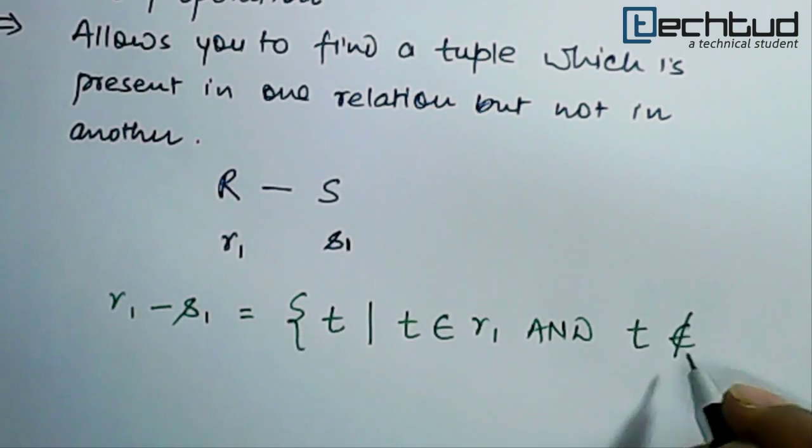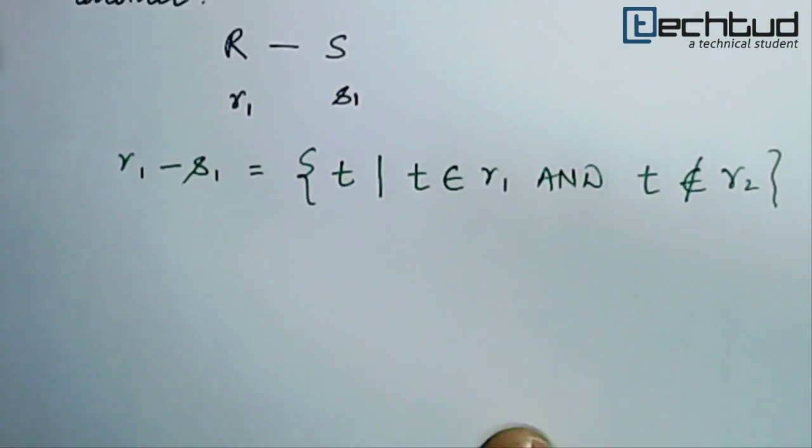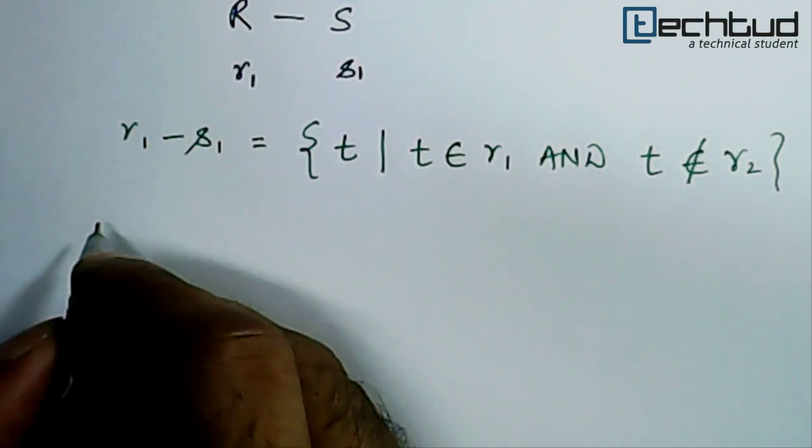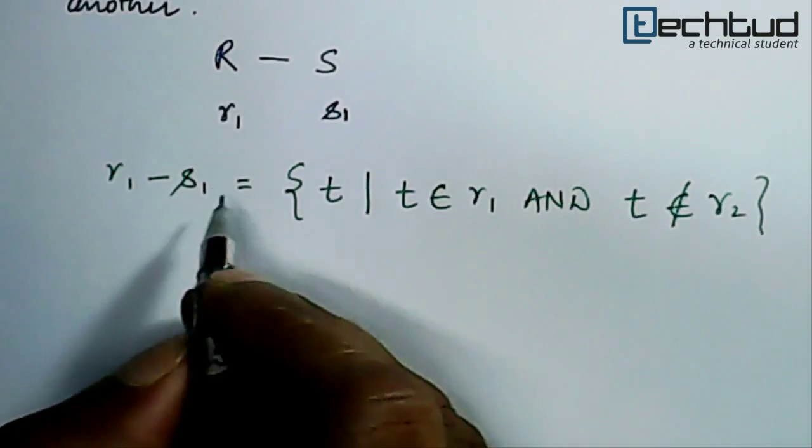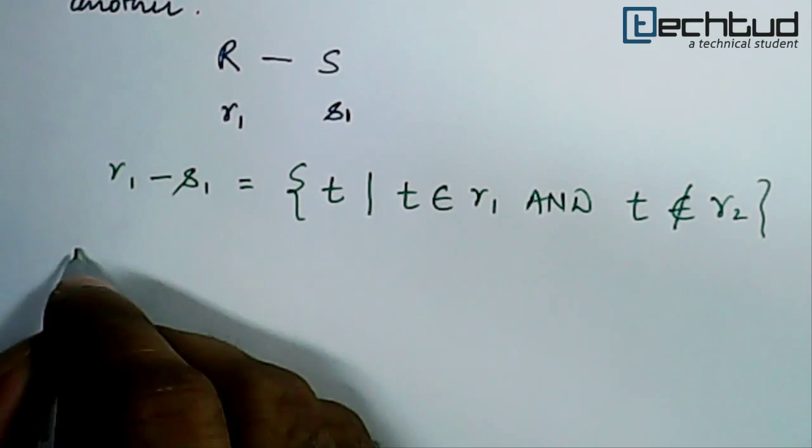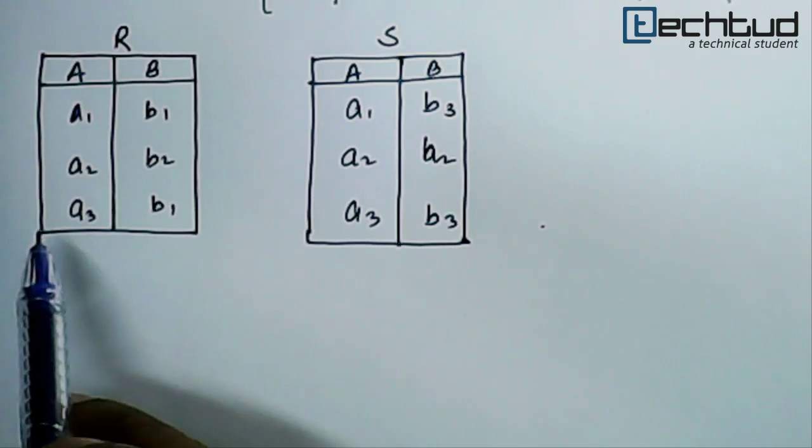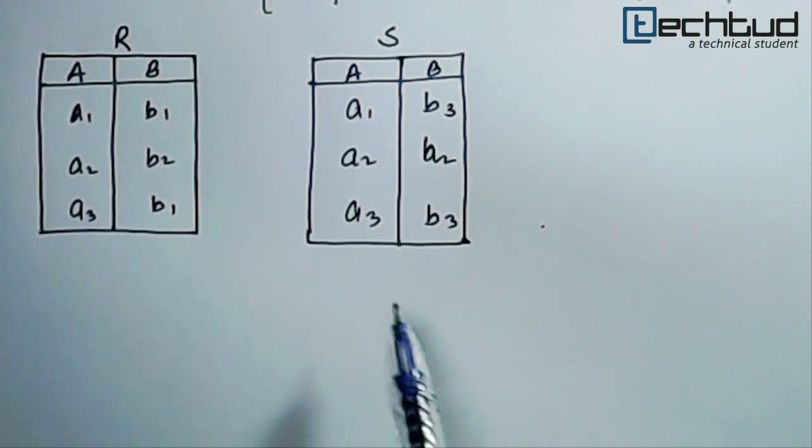That is how we write. Let us understand it. Let us say we have two instances of relationship R and S as follows. So if we have two relations R and S and the instances for these relations are as given here.